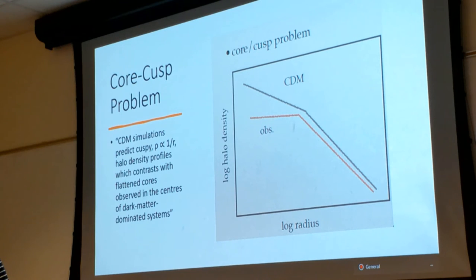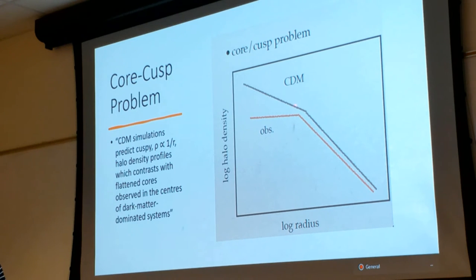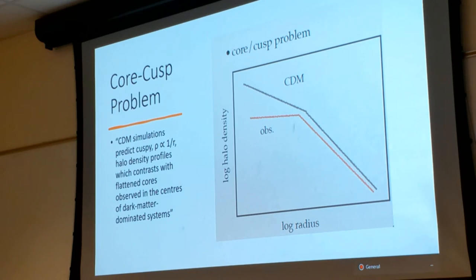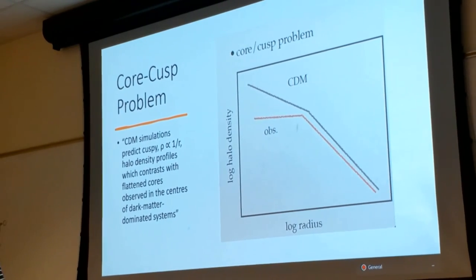The third problem is the core-cusp problem — the first historically. If we look at mass densities in galaxies at inner radii, regular cold dark matter simulations show the density goes as 1/r — steadily increasing on a log-log plot — creating a cusp. However, observations show the profiles are very much flat, forming a core. This is the core-cusp problem. It's somewhat harder to determine observationally, but there is clearly a discrepancy.